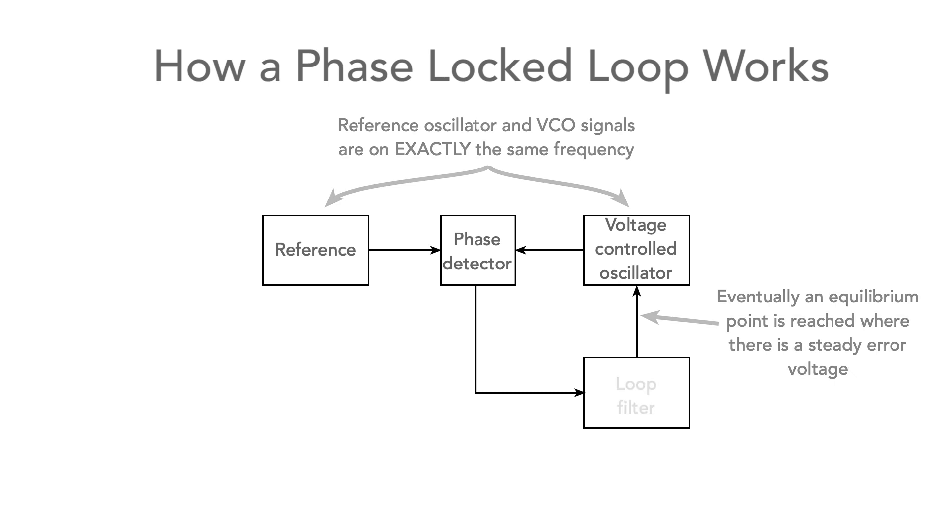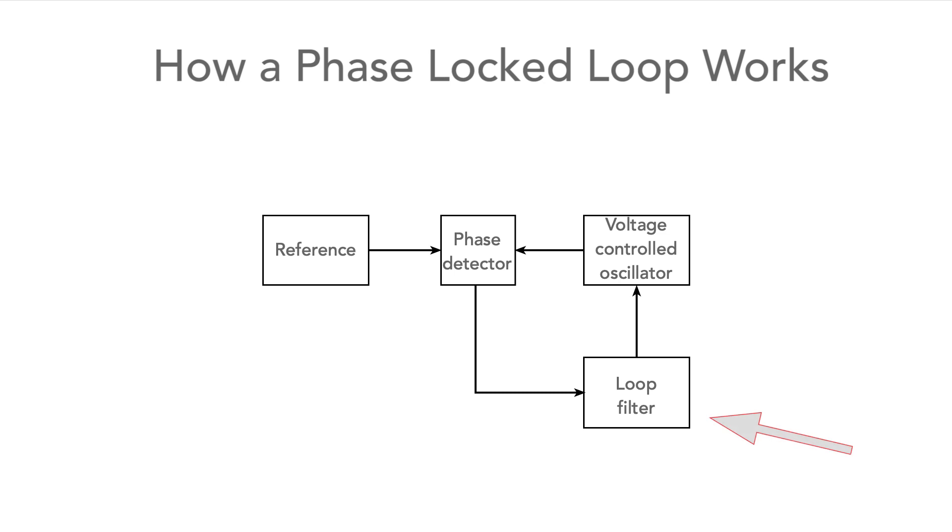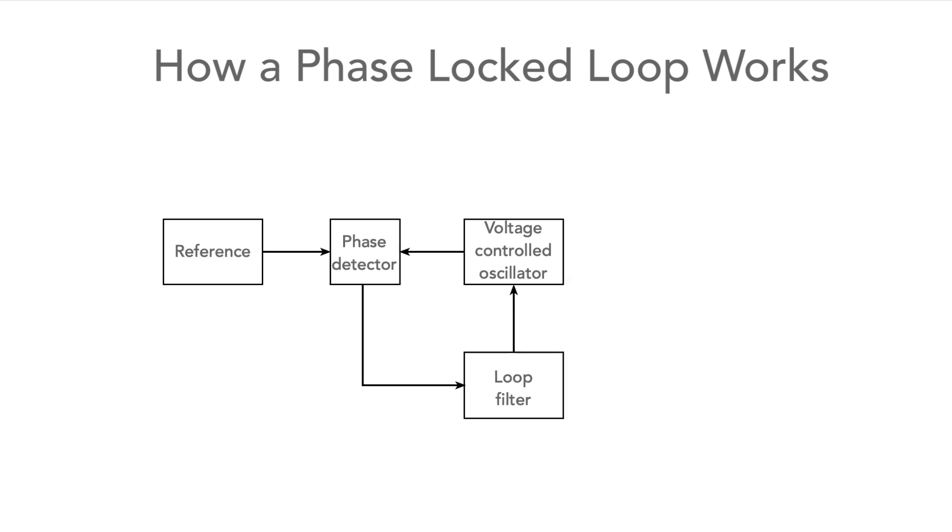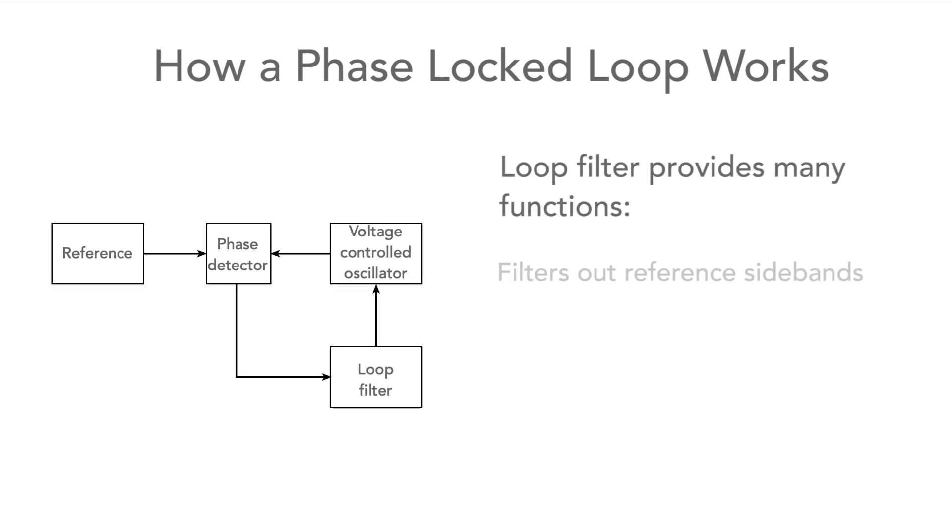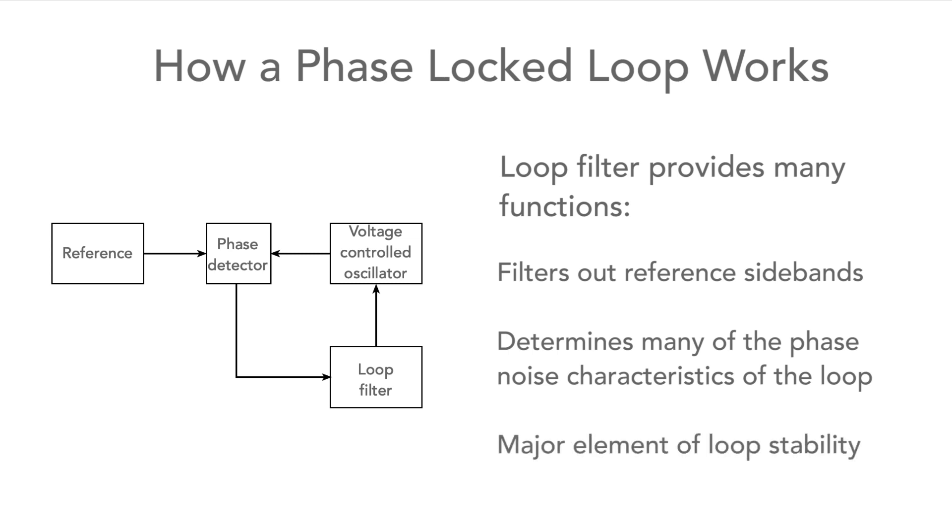The last block in the circuit is the filter. This is placed between the phase detector and the VCO control terminal. It's a really essential part of the loop, and it provides many functions, including filtering out unwanted elements of the reference frequency signal, controlling the phase noise characteristics of the loop, and being a major element in determining the loop stability and its agility.